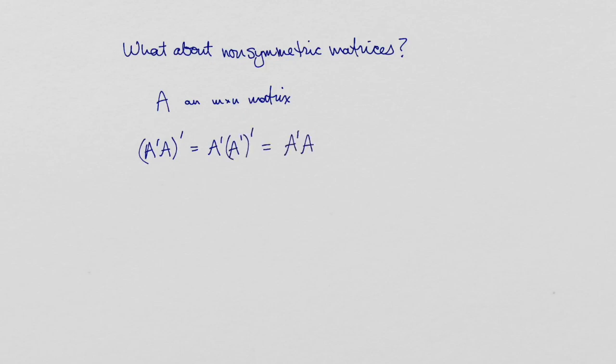So we can diagonalize A transpose A as VΛV inverse, and that allows us to define a matrix which we'll denote the square root of A transpose A to be V times the square root of Λ times V inverse, where the square root of Λ is the matrix obtained by square rooting all the diagonal entries of Λ.